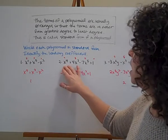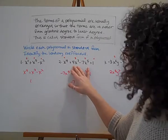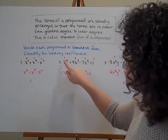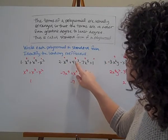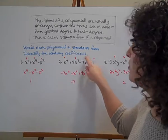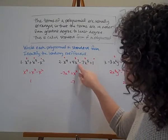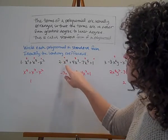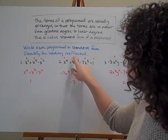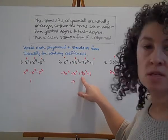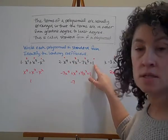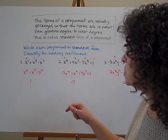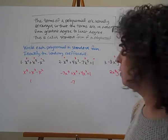Next expression: x to the fourth plus 4x to the third minus 7x to the fifth plus 1. The degrees are 4, 3, 5, and 0. Putting the fifth degree first — and remembering the negative sign goes with it — gives negative 7x to the fifth, plus x to the fourth, plus 4x to the third, plus 1. The leading coefficient is negative 7.